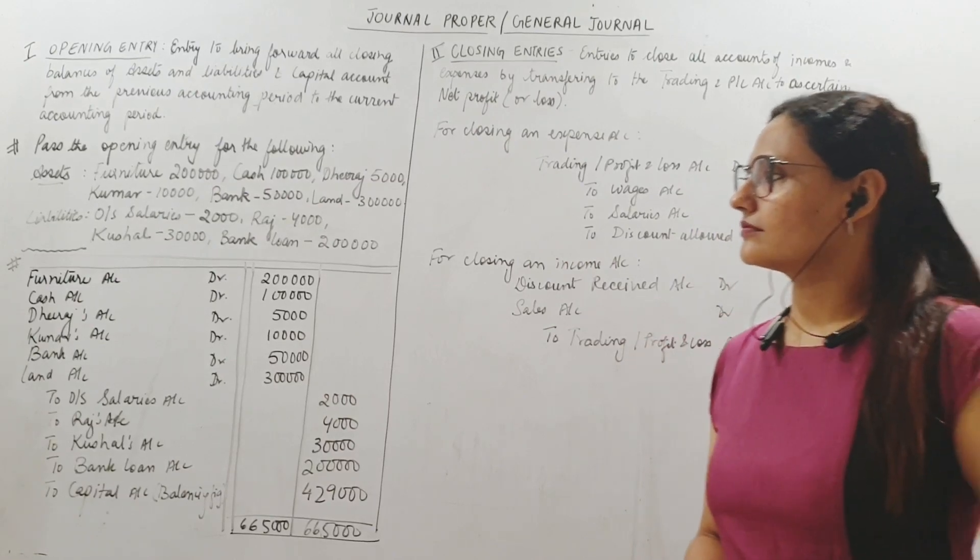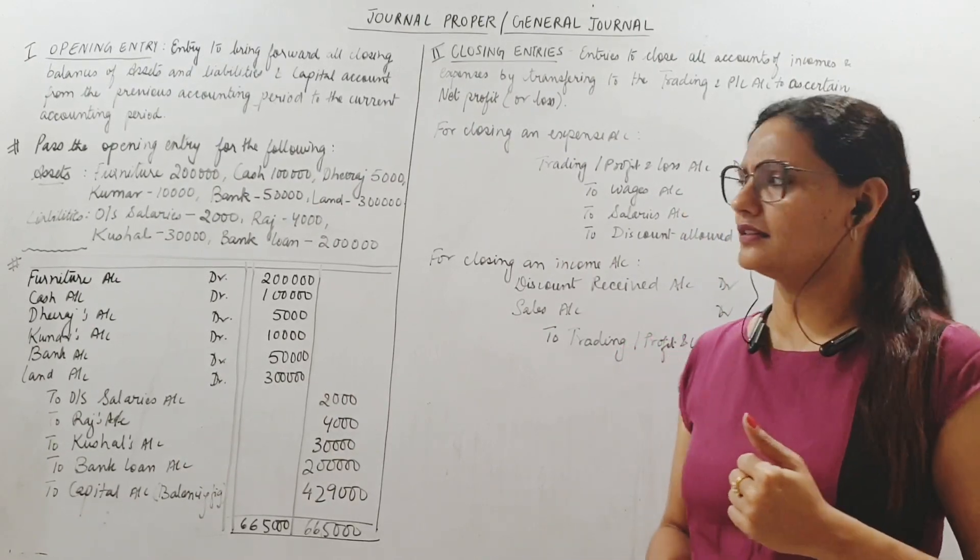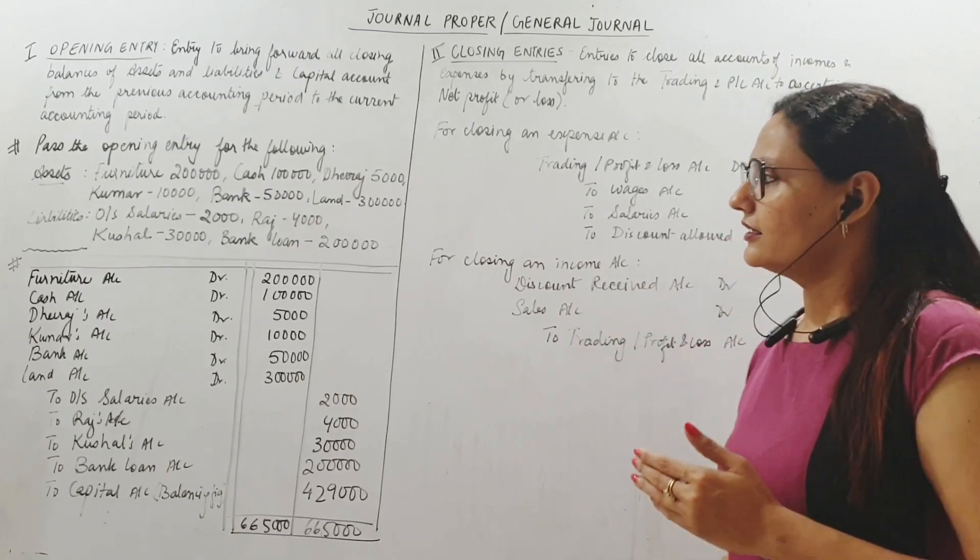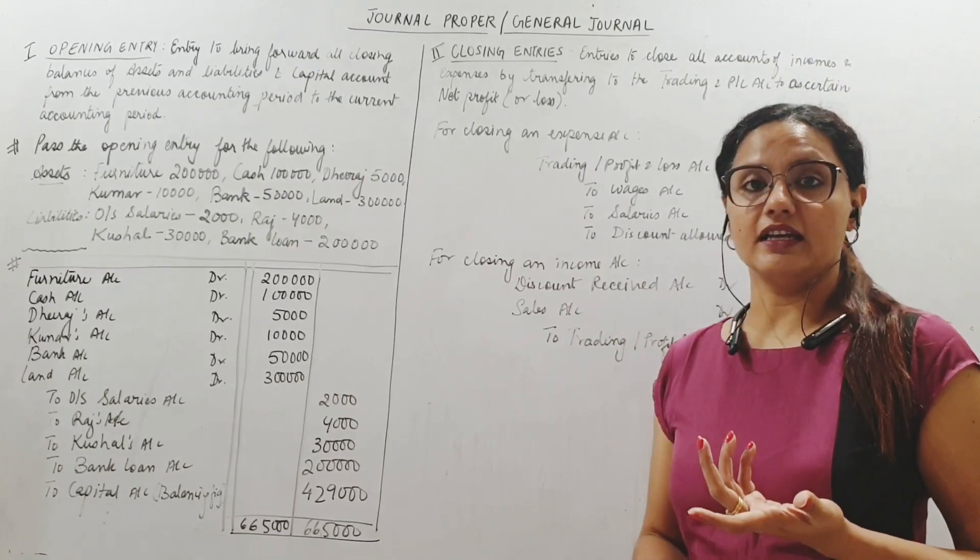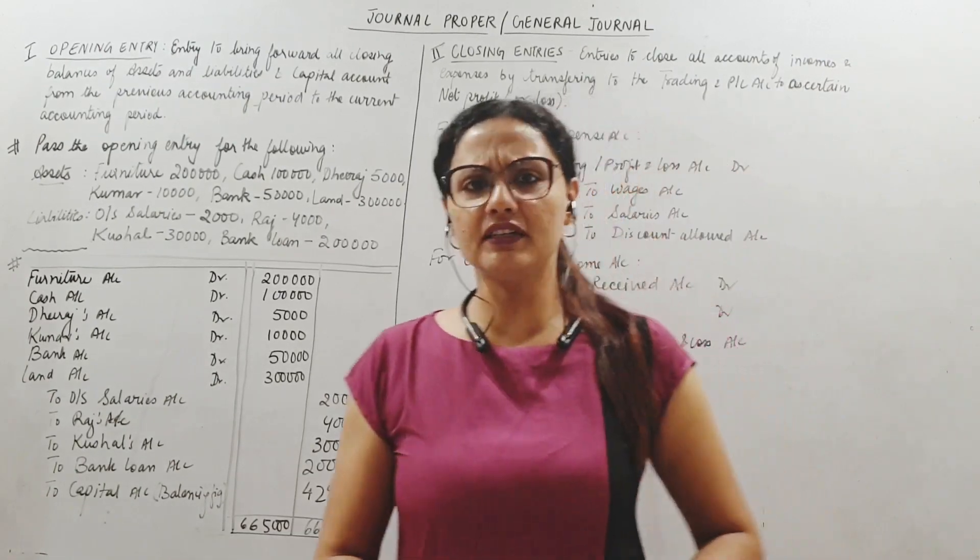Something that you had to pay but have not yet paid is a liability. So salary is an expense, but outstanding salary meaning salary due but not paid is a liability. Get the difference there. Then Raj - Raj must be a creditor, that is why it is in the liability list. Kushal - creditor. Bank loan - a liability because I have to pay back the loan.